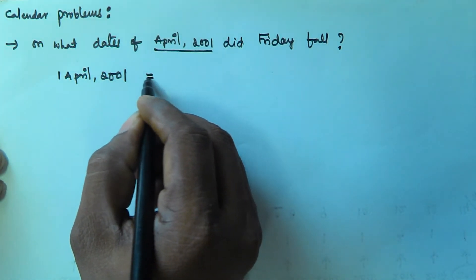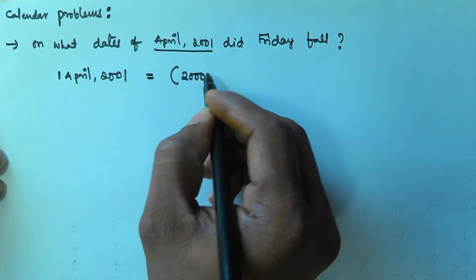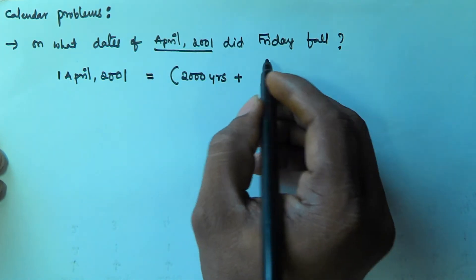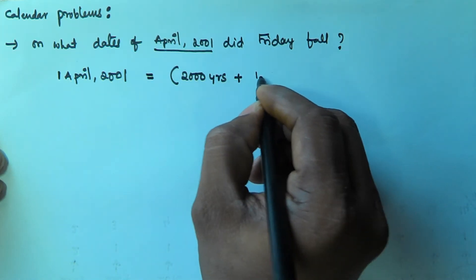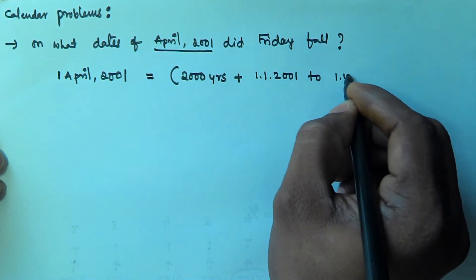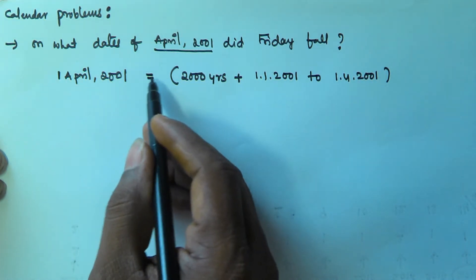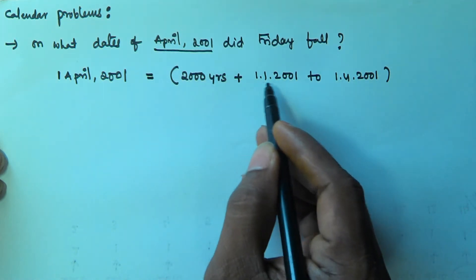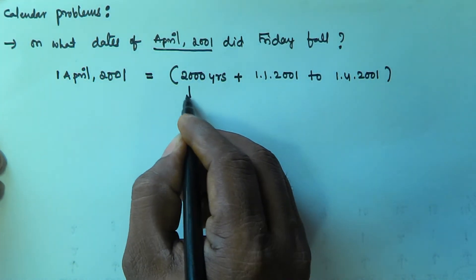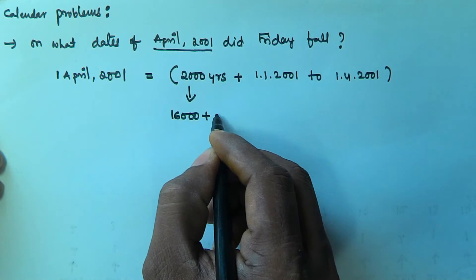1st April 2001 is going to be divided into different parts: 2000 years, plus the period from 1st January 2001 to 1st April 2001. And 2000 can be further divided into 1600 plus 400.